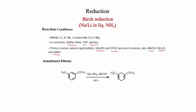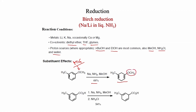For meta-methyl anisole treated with sodium in liquid ammonia and methanol, 44% yield is obtained because the methoxy group is the stronger electron-donating group and controls the reaction. You get the cyclohexadiene where the methoxy group retains the double bond. For meta-methylbenzoic acid — an electron-withdrawing group — treated with sodium in liquid ammonia and methanol, followed by ammonium chloride, 94% yield is obtained where the carboxylic acid is present at the saturated carbon atom.